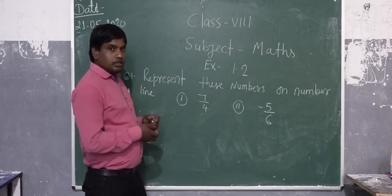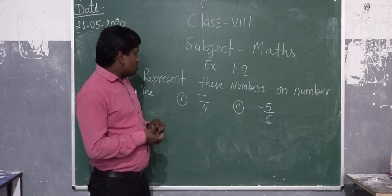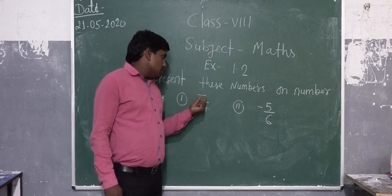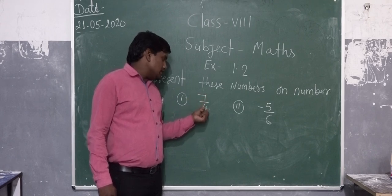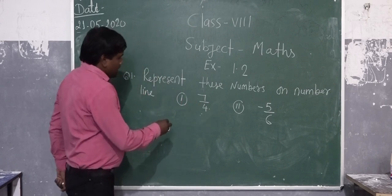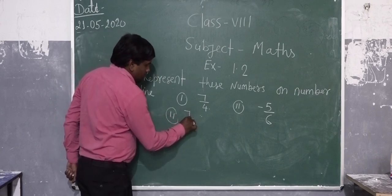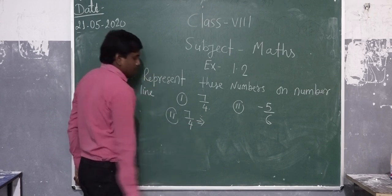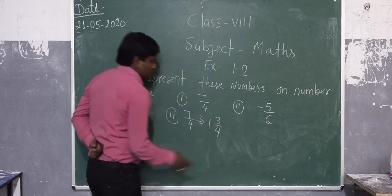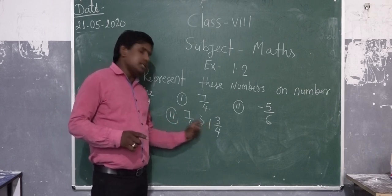The procedure for how to represent a rational number on the number line: first of all, we check the numerator and denominator. Here the numerator is greater than the denominator, so we change it into a mixed fraction. We can write 7 by 4 as 1 and 3 upon 4. So we change 7 by 4 into a mixed fraction.